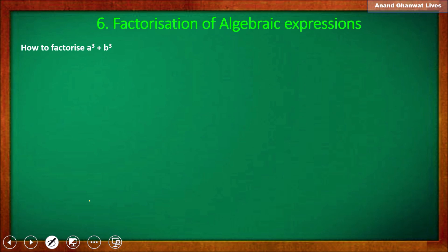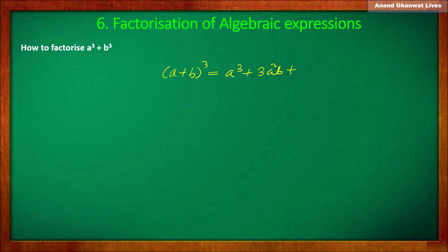For that we have to remember the formula for the cube of a plus b. The expansion of cube of (a plus b) is a cube plus 3a squared b plus 3ab squared plus b cube.